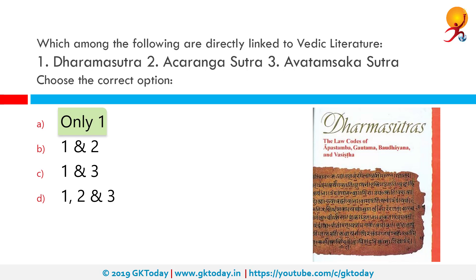The correct answer is Dharma Sutra. Dharma Sutra is a genre of Sanskrit texts and refers to the treatises or shastras of Hinduism on Dharma. There are many Dharma Sutras, variously estimated to be 18 to about 100, with different and conflicting points of views.